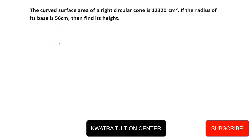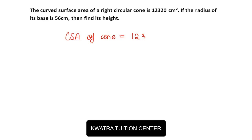Let's start with a new question. The curved surface area of a right circular cone is 12,320 square centimeters. If the radius of its base is 56 centimeters, then find the height. The CSA of a cone is equal to π × r × l, where the formula is πrl. The radius given here is 56.